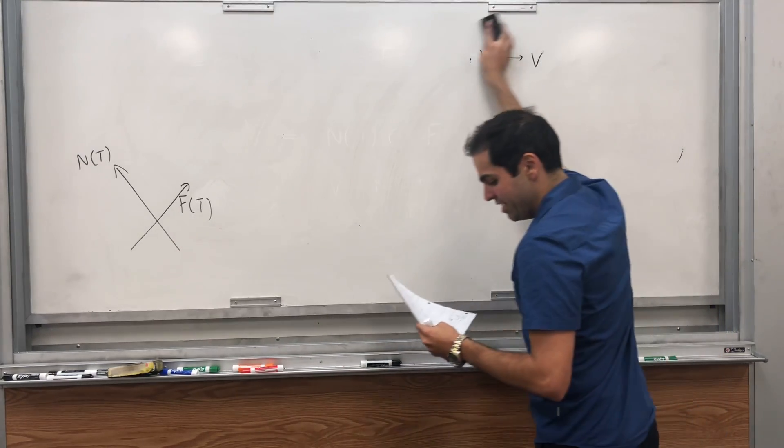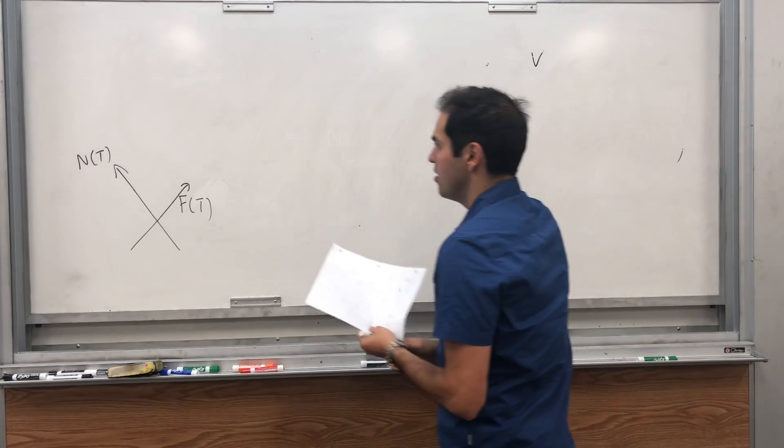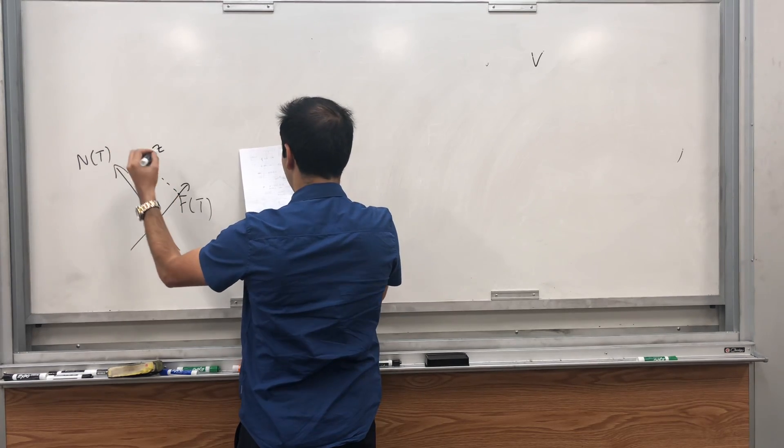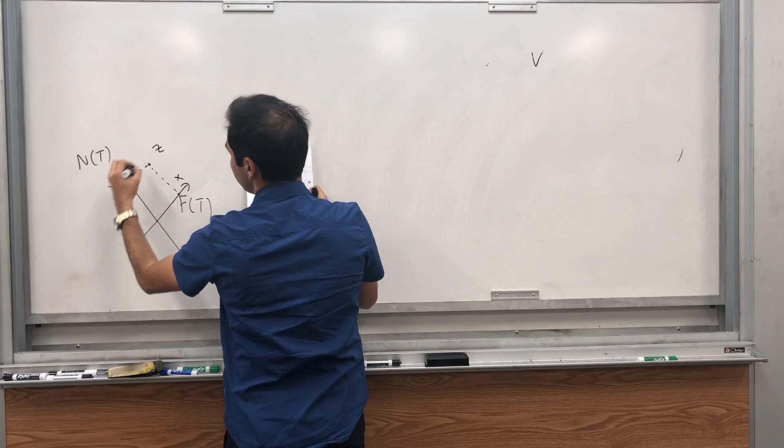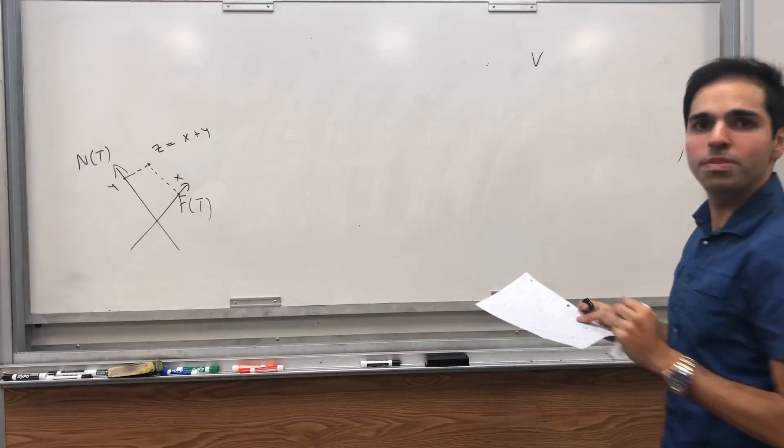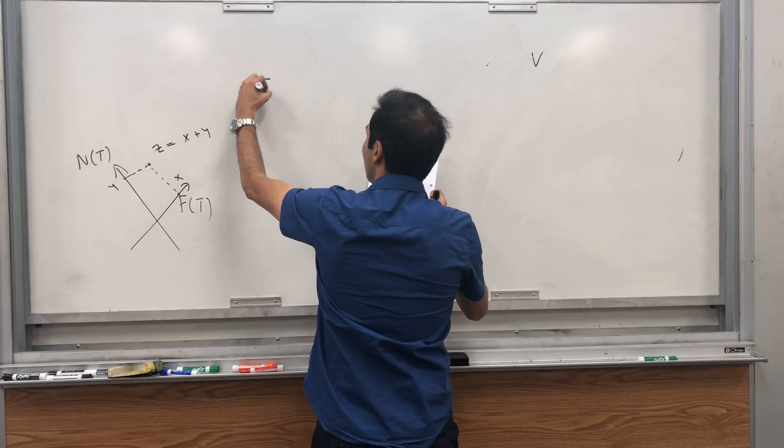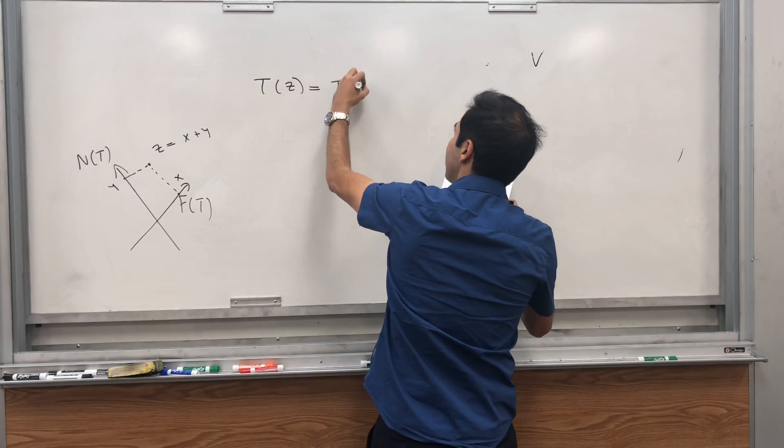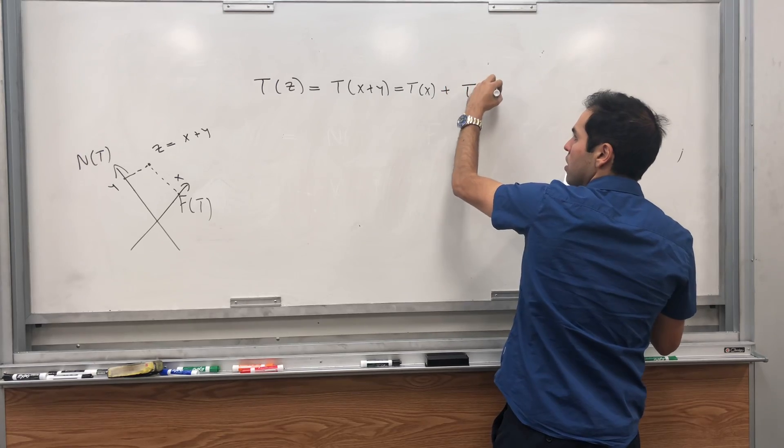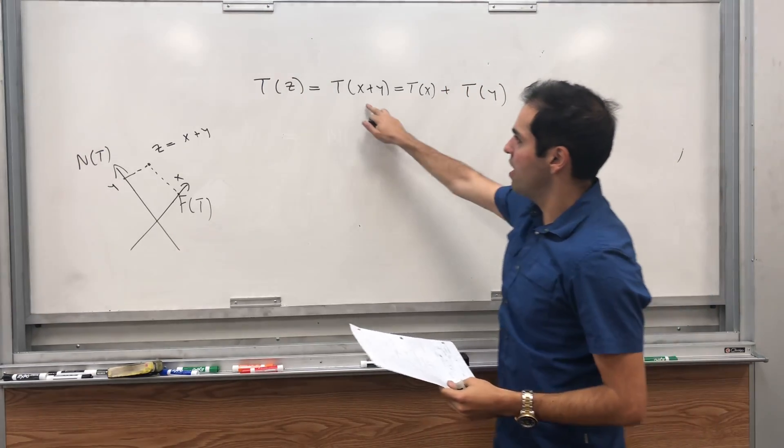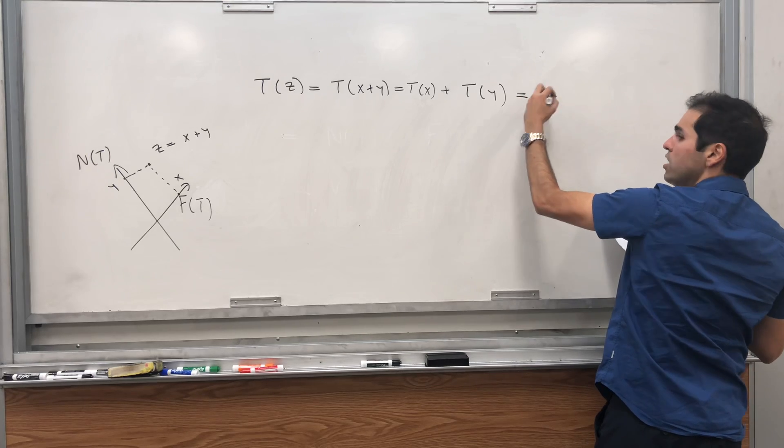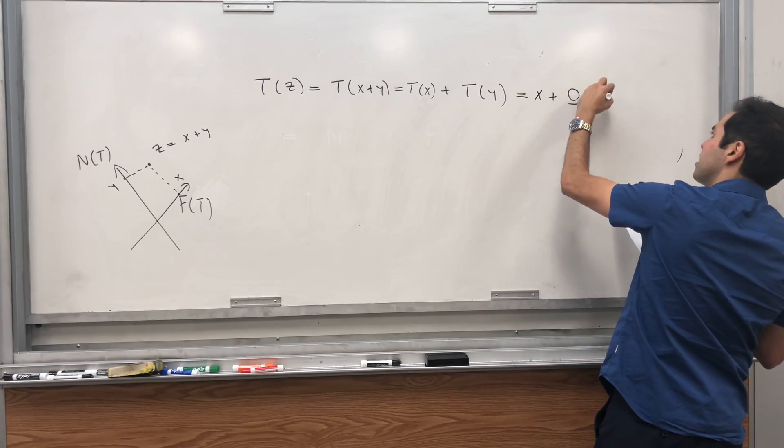It turns out all the matrices whose square is equal to itself are projection matrices. And why am I claiming it's a projection? Well, suppose you can somehow write z, any vector z. We know it's the sum of a fixed point and a null space vector. So z can be, it turns out, uniquely written as x plus y. Where you can think of x as being the x coordinate and y being the y coordinate. Then what is T(z)? Well, that's T(x + y). And that's T(x) plus T(y). But what is T(x)? x, in this case, is in the fixed point space. So T(x) is x. And T(y), it's in the null space. So it's a zero vector. So it's x.